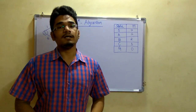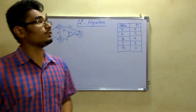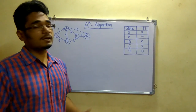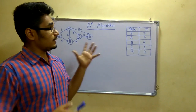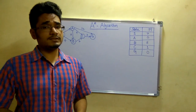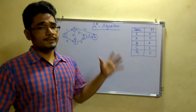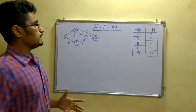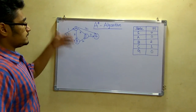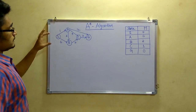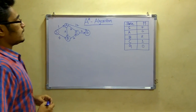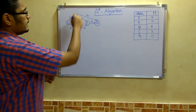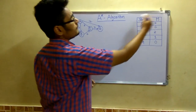This is Ranjiraj and today I am going to teach you the A* algorithm. Now this A* algorithm is under the artificial intelligence topic, so it is a bit complicated problem. In this problem they will give you a graph which has a start node as well as a goal node, as well as some intermediate nodes in between like A, B, C.